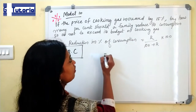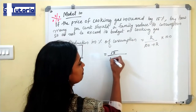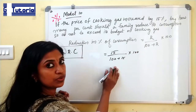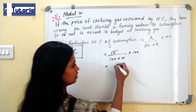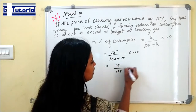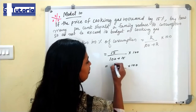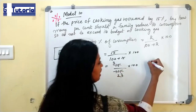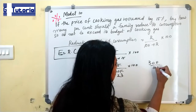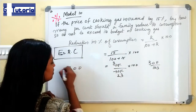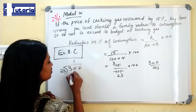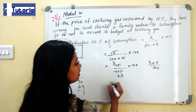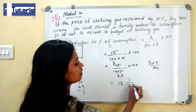In this case R equals 15. So, 15/(100 + 15) × 100 = 15/115 × 100 = 300/23, which is 13 and 1/23 percentage. By this much percentage, consumption has to be reduced to maintain the expenditure as constant.